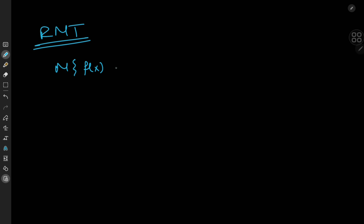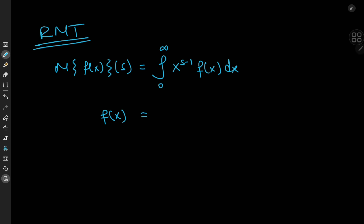What does this theorem actually say? If you want the Mellin transform of a function f of x, the Mellin transform is a function of a parameter s and is defined as the integral from 0 to infinity of x to the s minus 1 times f of x dx. The type of function to which the theorem applies is very specific: f of x needs to be expandable as an infinite series, namely a sum over non-negative integers k of negative x to the k divided by k factorial times phi of k.